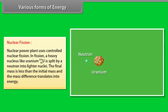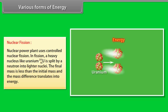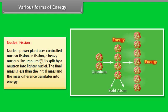Nuclear fission. Nuclear power plant uses controlled nuclear fission. In fission, a heavy nucleus like uranium-235-92 is split by a neutron into lighter nuclei. The final mass is less than the initial mass and the mass difference translates into energy.